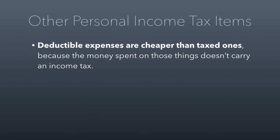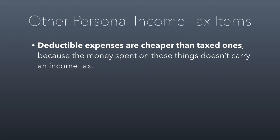Deductible expenses are cheaper than taxed ones because the money you spend on those things doesn't carry an income tax. If I spend my money on a candy bar that costs a dollar, it actually costs a dollar plus whatever income tax I owe. If my income tax rate is 15%, that candy bar actually costs me $1.15. But if I spend that dollar on a donation instead, the donation only costs me a dollar, because I can deduct the donation from my taxes — I don't owe taxes on the money I spend on donations.